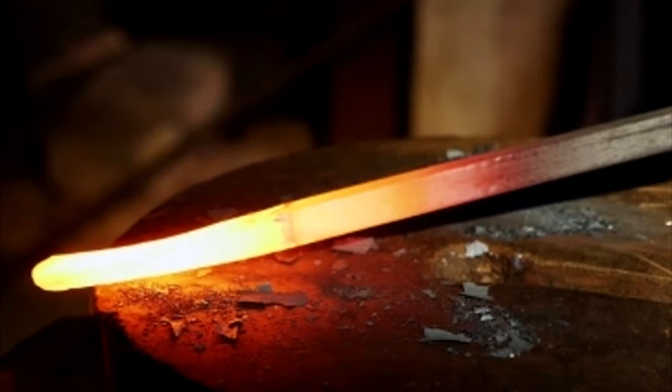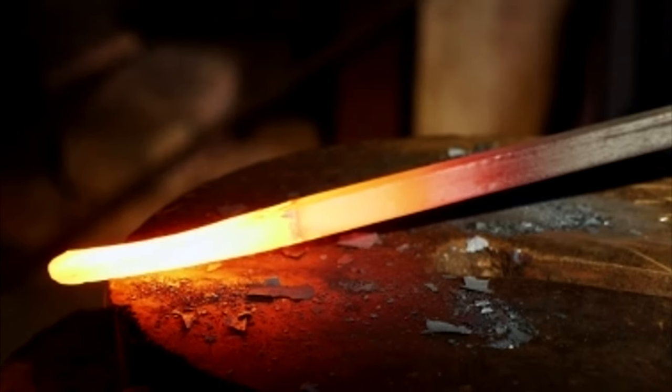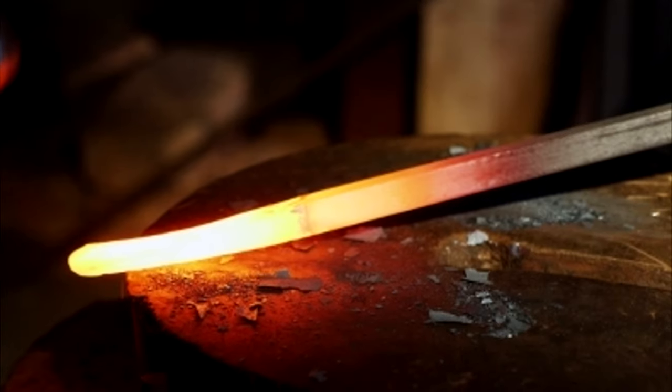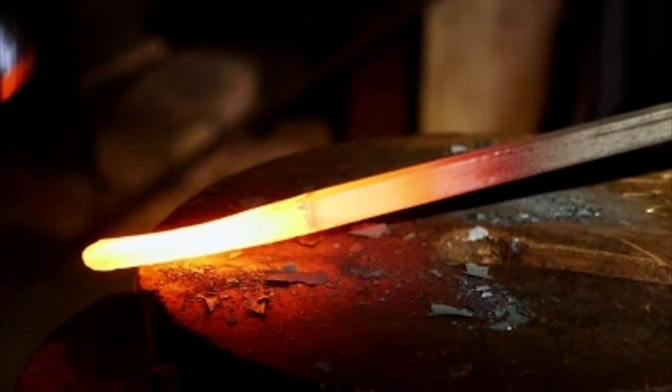Take a look at this iron rod. On the right, where it's cool, it's radiating in the infrared, so we can't see it. Its gray color is based on reflected light.